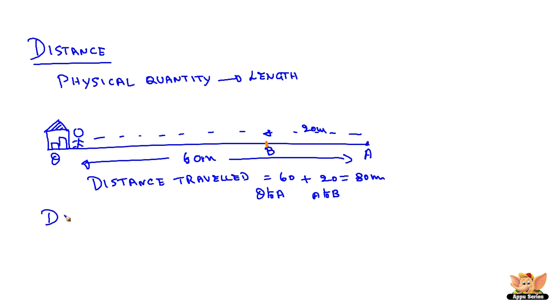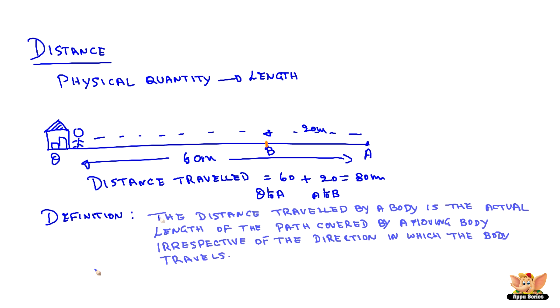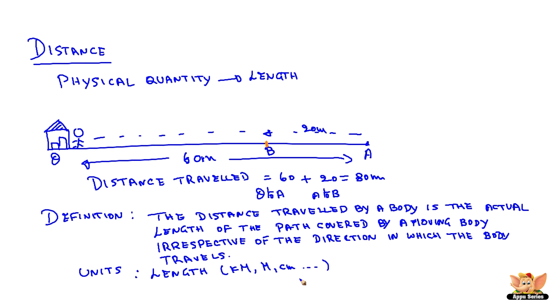From this example, let us define what distance is. The distance travelled by a body is the actual length of the path covered by a moving body, irrespective of the direction in which the body travels. Distance is measured in units of length such as kilometer, meter, centimeter, etc. Distance is a scalar quantity as it has only magnitude and does not depend on direction.